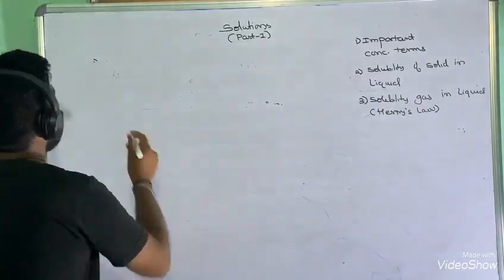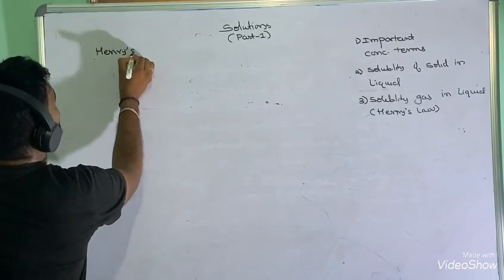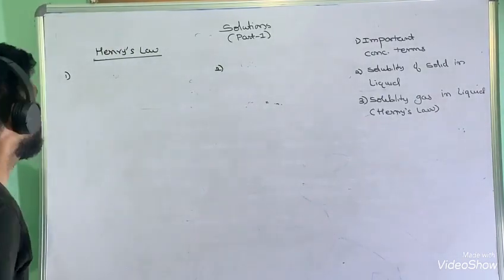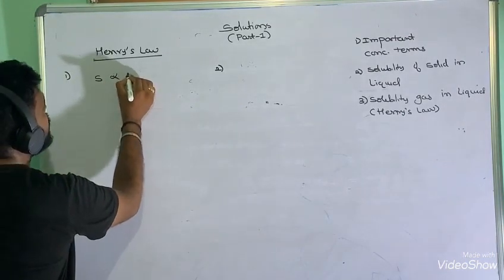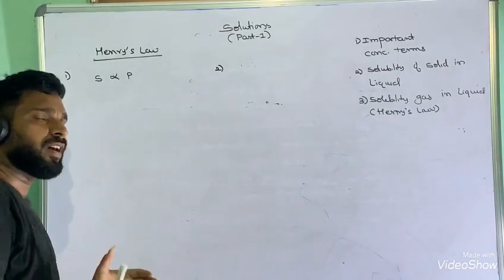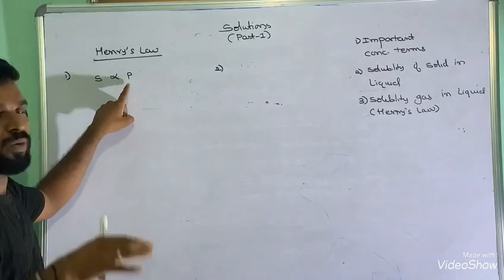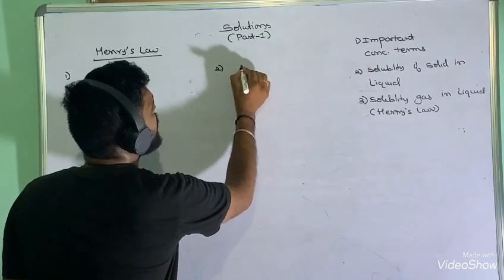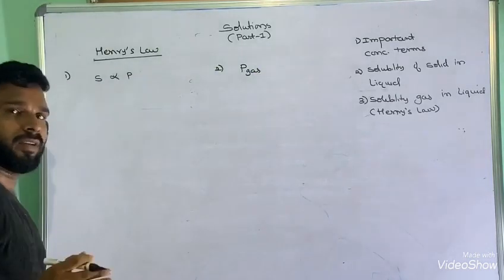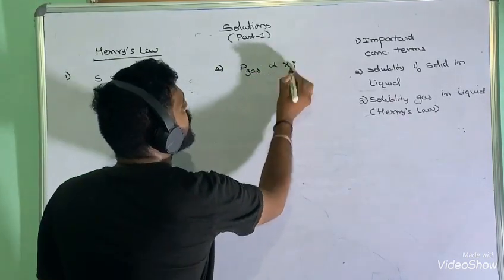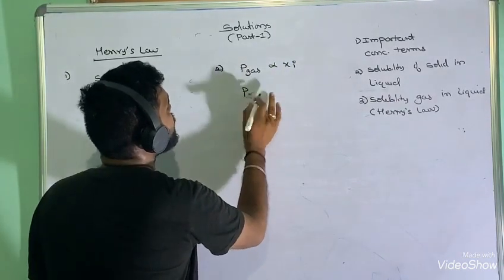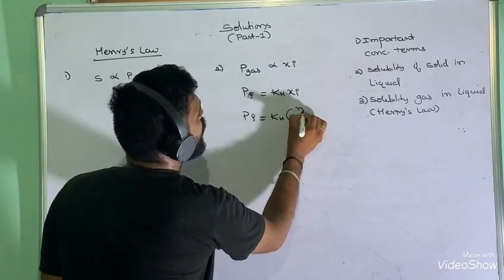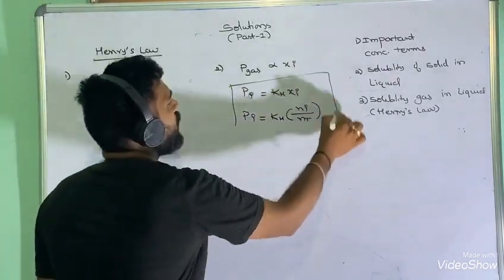Next, solubility of gas in liquid is explained by Henry's law. There are two ways to express it. First: the solubility of a gas is directly proportional to the pressure over the surface of the liquid. Second (used more in problems): the partial pressure of a gas is directly proportional to its mole fraction in the solution. Mathematically: partial pressure P = K_H × χ_i, or P = K_H × (moles of component / total moles). Here K_H is Henry's law constant.